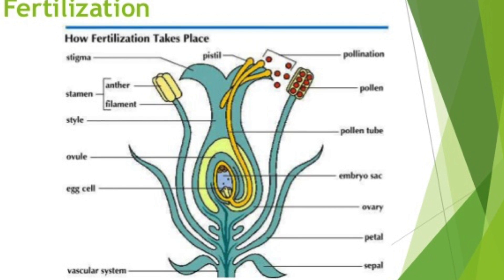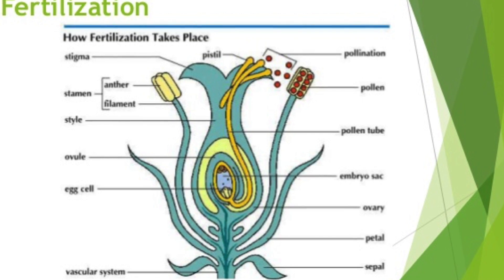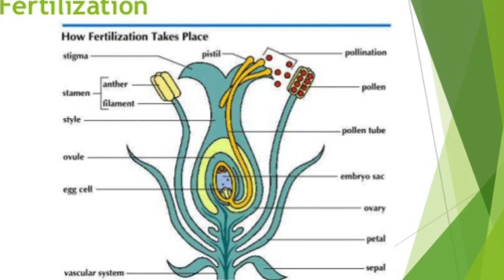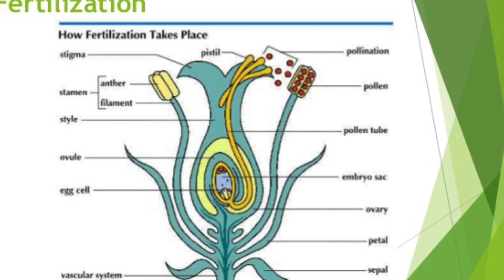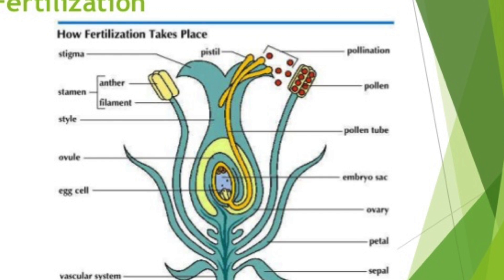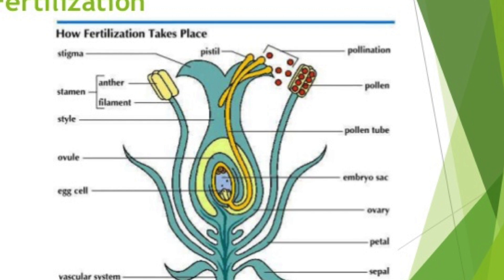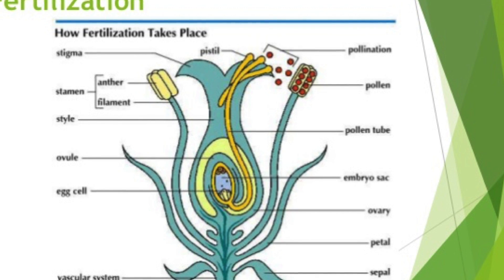Male gametes are enclosed in pollen grains and are carried by wind or insects to the female reproductive organs. The final product of fertilization, the embryo, is encased in a seed.